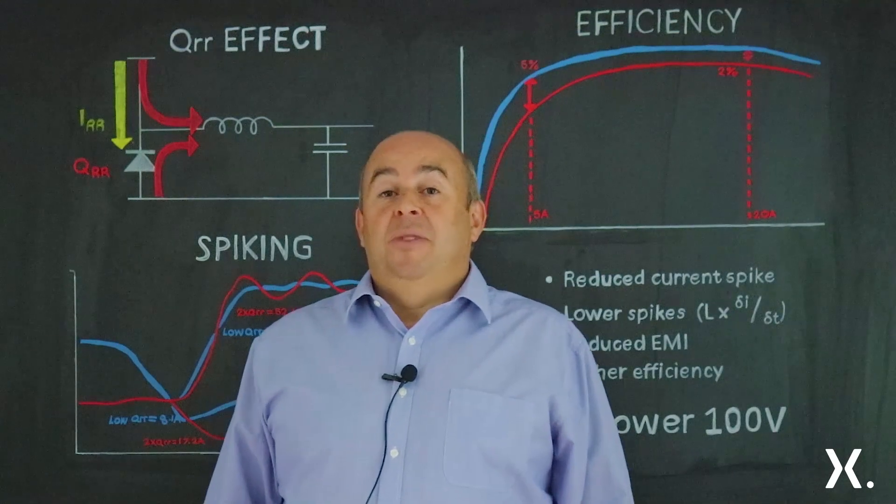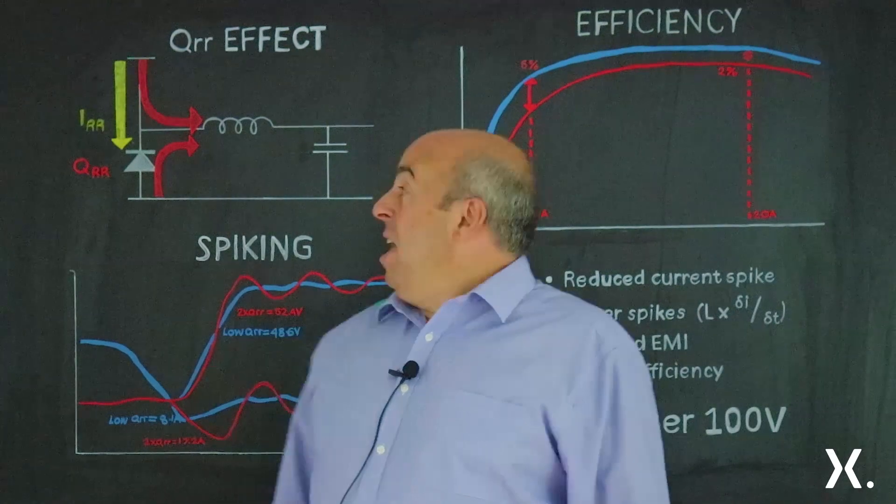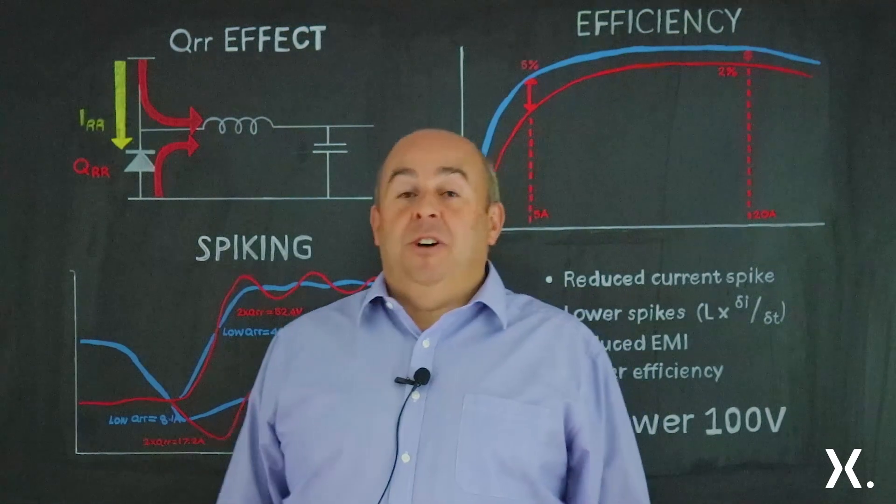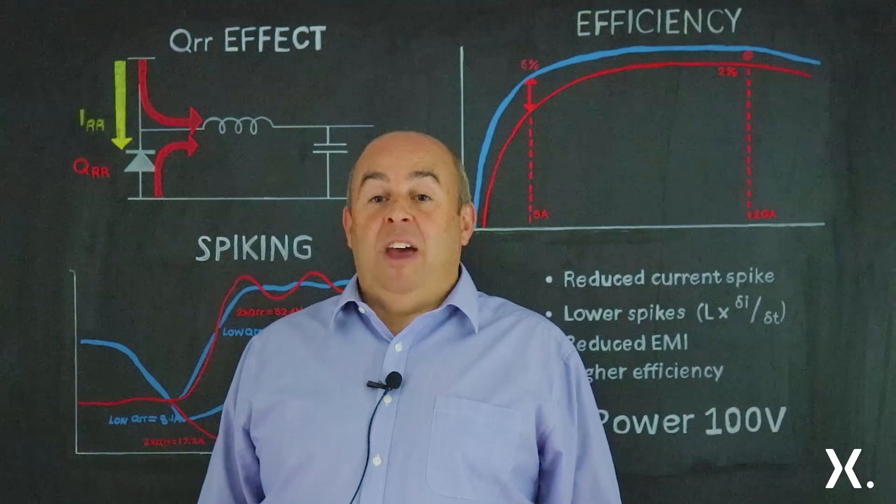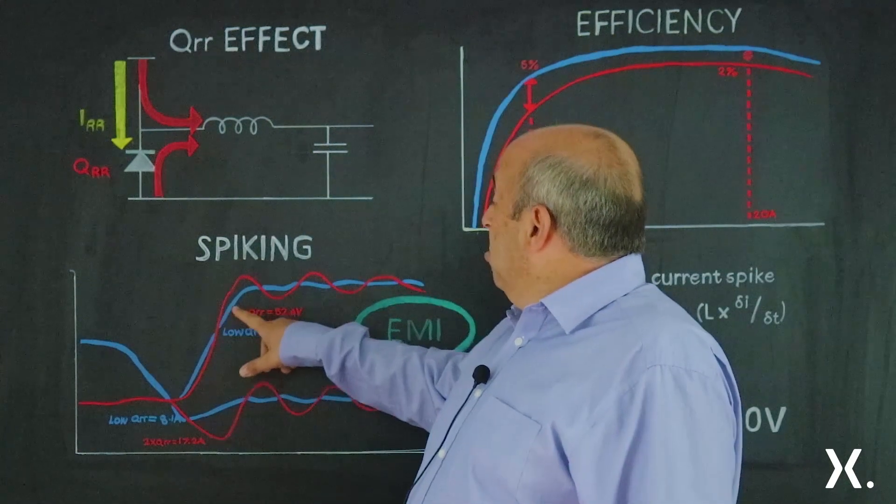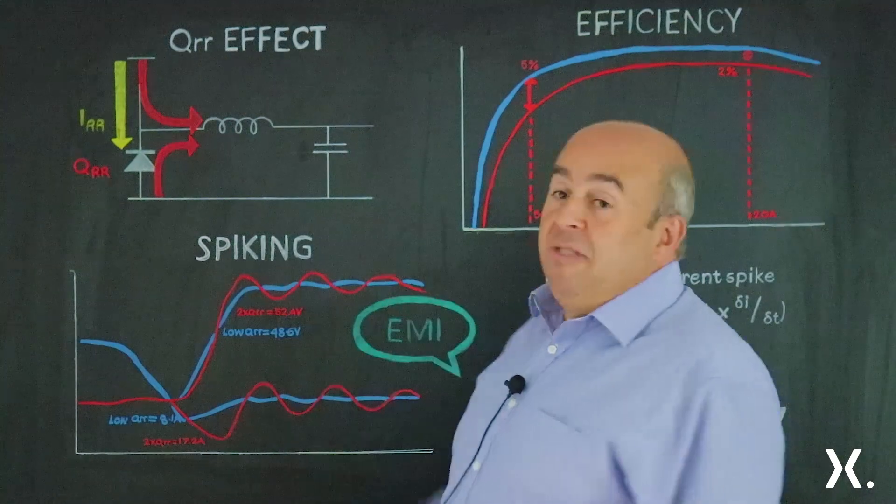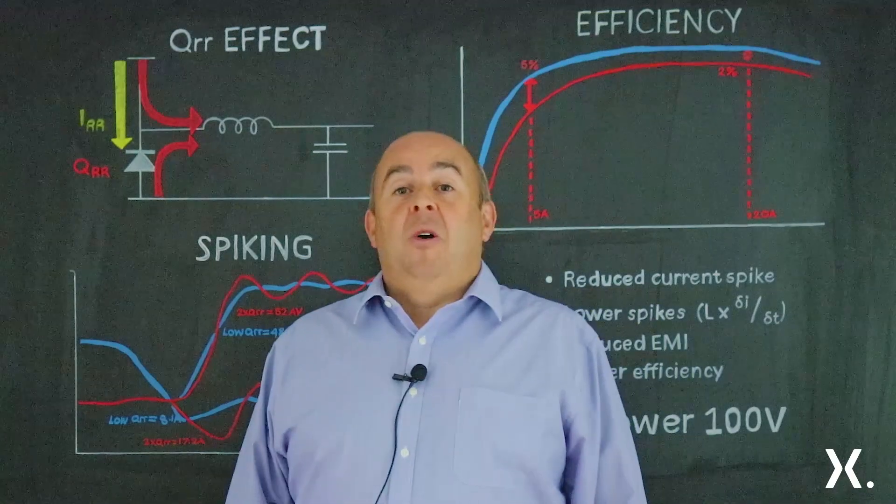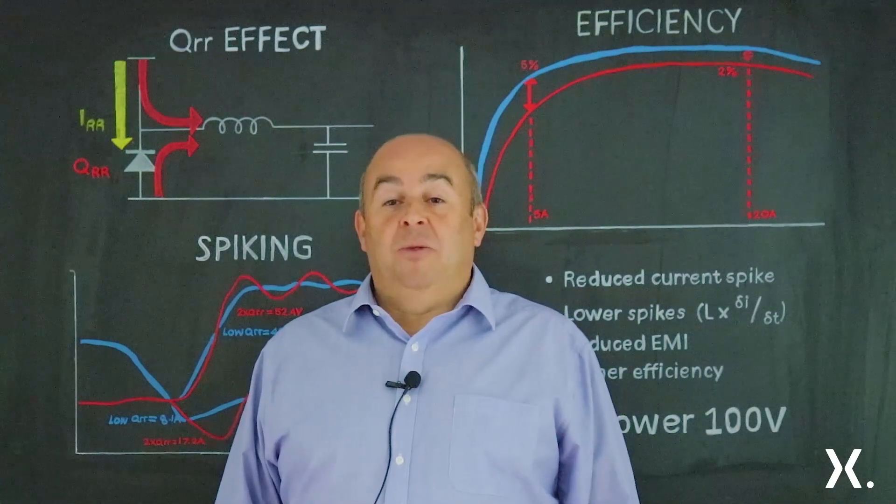Typically tens of amps for tens of nanoseconds, this current gives rise to additional I² R losses in the high side MOSFET but also interacts with the inductance in the PCB to give the spike and ringing or resonance associated with the switching cycle.